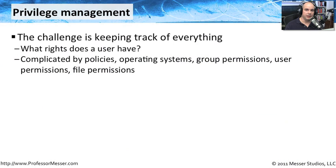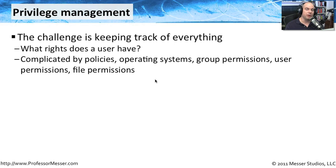In many ways, getting someone authenticated to the network is the easy part. Once they get here, we need to make sure they have the right privileges to access the resources they need to do their job. We have to figure out what rights a user might have to a folder, to a file — maybe read access in one part of the network, read and write in another. There are all kinds of overlapping policies, from operating system changes to group permissions to user permissions, and the individual file might also have its own rights. All of those interact together.